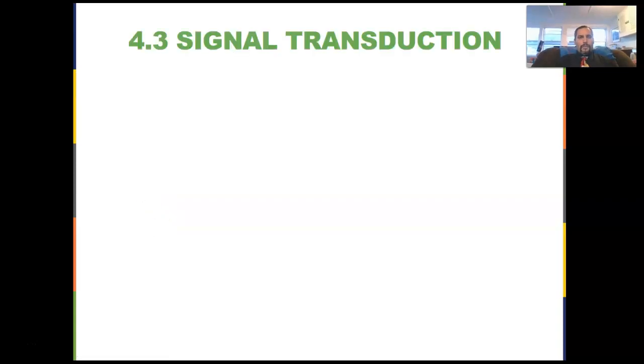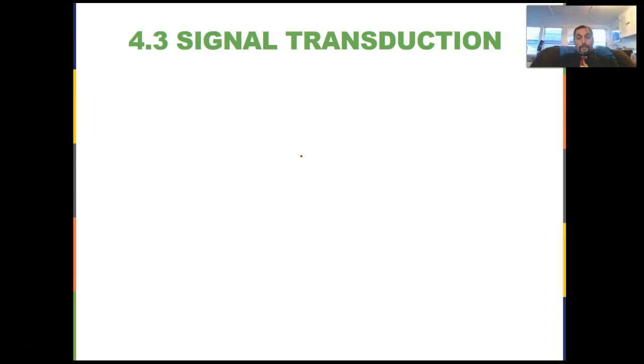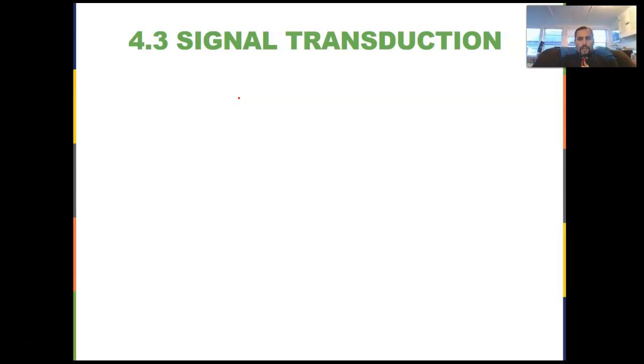Hi everyone and welcome to VODCAST 4.3 for AP Bio. We're going to look today at signal transduction. Last VODCAST we introduced signal transduction and talked about the different phases — reception, transduction, and response — as well as the receptors and ligands associated with signal transduction and cell communication. Today we're going to look more closely at the actual transduction phase in terms of the pathways involved and the types of cellular responses those pathways can elicit.